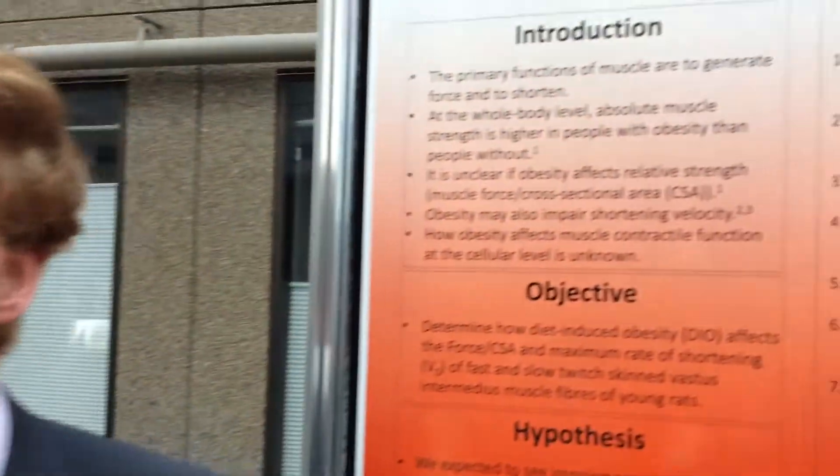We did this by looking at the relative force, or force per cross-sectional area, being generated during contraction, as well as the maximum rate of shortening, or V0. We predicted that both force per CSA and V0 would be impaired in rats with diet-induced obesity.